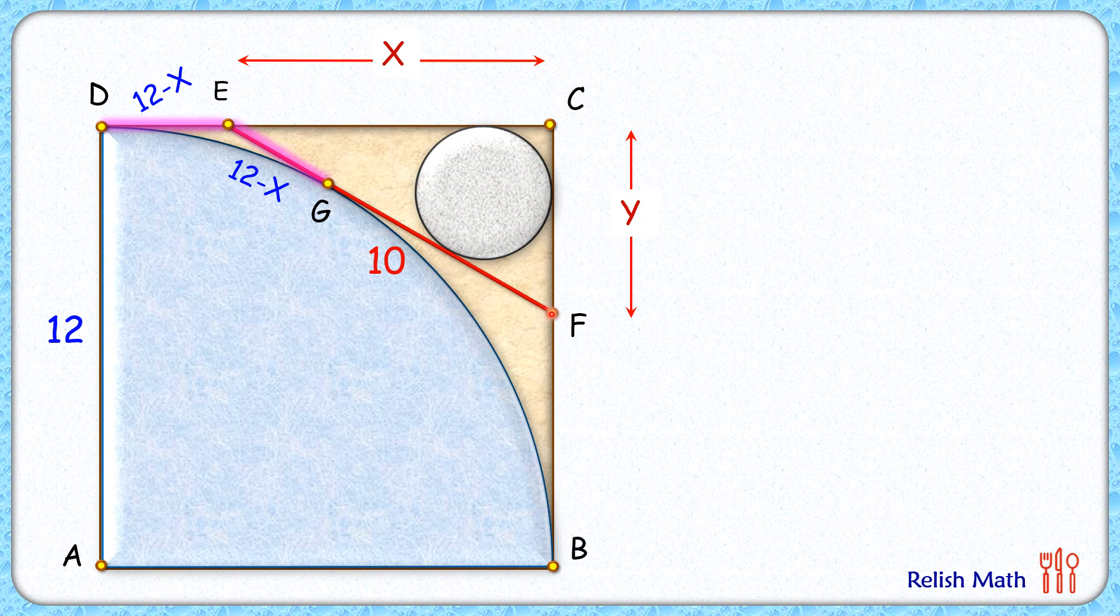So FB length is 12 minus y, and again from external point F two tangents are drawn, FB and FG, so by theorem both will be equal, or the length FG is 12 minus y.